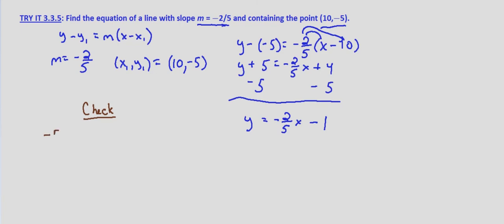Negative 5 for y, we want to know, does that equal negative two-fifths x, which is 10 from our point, minus 1. So negative 5, does that equal negative two-fifths times 10, is negative 4, minus 1. And yes, we do indeed have negative 5 equals negative 5.